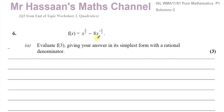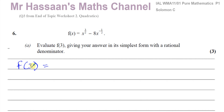This is a question where we have f(x) = x to the power of three over two, minus eight x to the power of minus a half. We've got to evaluate f(3), giving our answer in its simplest form with a rational denominator. Evaluating f(3) means replacing the x in the function with a three.